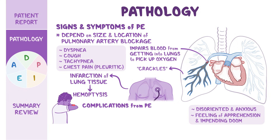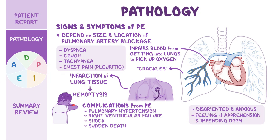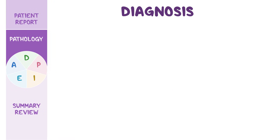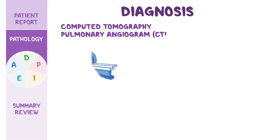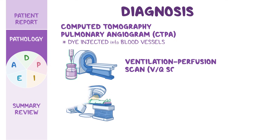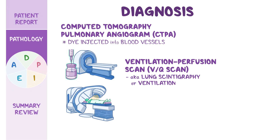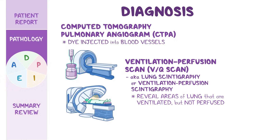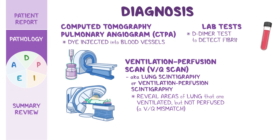Further deprivation of oxygen from the lung tissue leads to infarction, which may result in hemoptysis. Complications from a PE can include pulmonary hypertension, right ventricular failure, shock, and sudden death. Diagnostics used to identify a PE include computed tomography pulmonary angiogram, or CTPA, where a dye is injected into the blood vessels to locate the blockage. A ventilation perfusion scan, or VQ scan — also called lung scintigraphy — can reveal areas of the lung that are ventilated but not perfused, called a VQ mismatch. Lab tests include a D-dimer test to detect fibrin breakdown products, which are usually present when there's a blood clot.